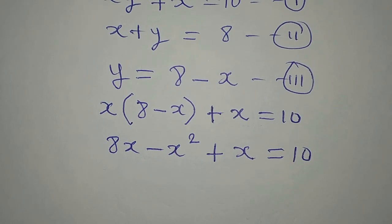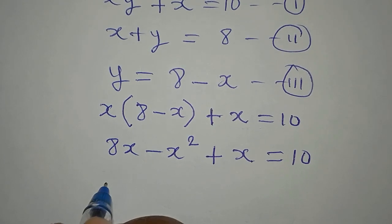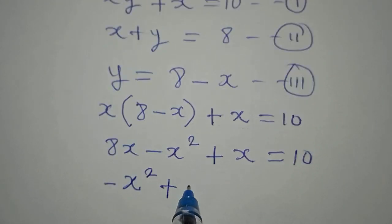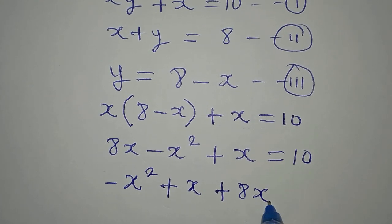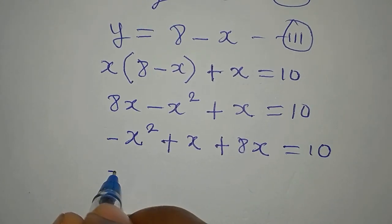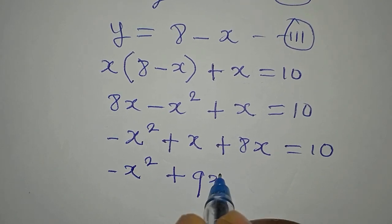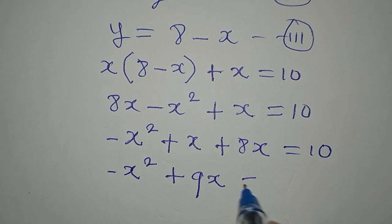8x minus x squared plus x equals 10. And like I always do, I make sure that the one with the highest power appears first. Negative x squared plus x plus 8x is equal to 10. Meaning that negative x squared plus 9x is equal to 10.